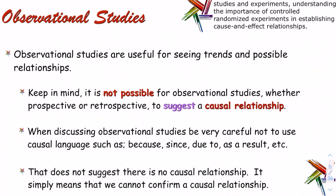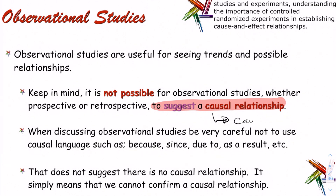The main thing with observational studies: they are very useful for seeing trends and possible relationships. It is not possible for observational studies — whether retrospective or prospective — to suggest a causal relationship. When discussing observational studies, be careful not to use causal language such as 'because,' 'since,' 'due to,' or 'as a result of.' That does not mean there is no causal relationship; it simply means we cannot confirm one from observational studies alone.